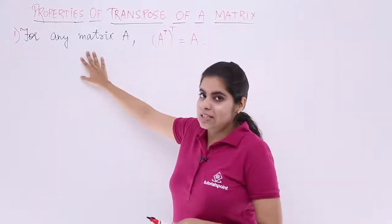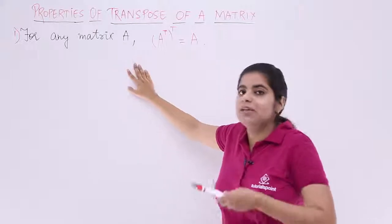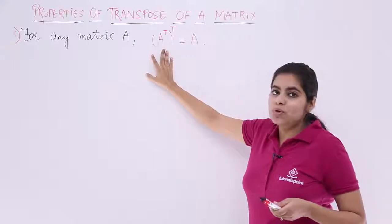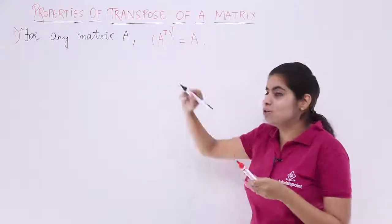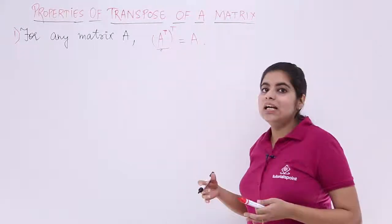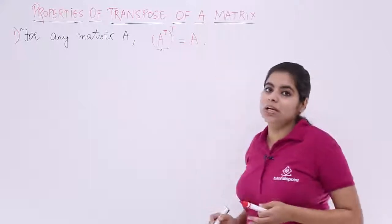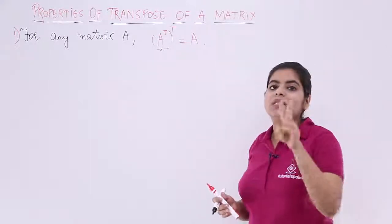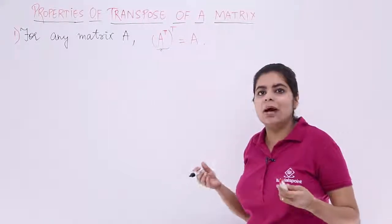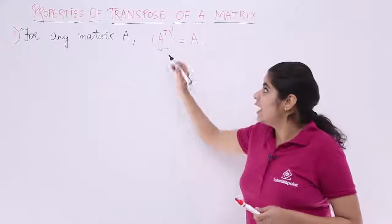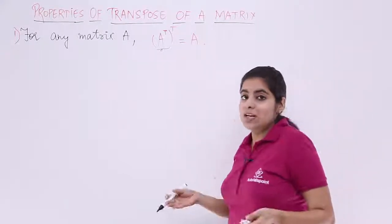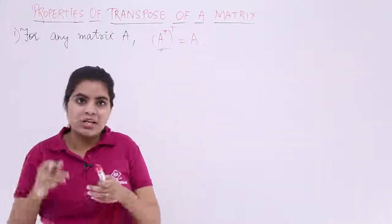The first property says: for any matrix A, if you compute its transpose — that is A transpose — and then compute the transpose again, you are going to get the same matrix that you started with. That means A transpose transpose is equal to A. If this is still not clear, we are ready with a numerical illustration to get started.